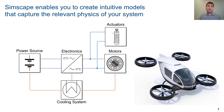Simscape lets you create an intuitive model that matches the physical representation of your system. For an electric aircraft, the system might consist of a power source, electronics, motors, and actuators. From this physical architecture, you can expand each subsystem with only the details that you need.